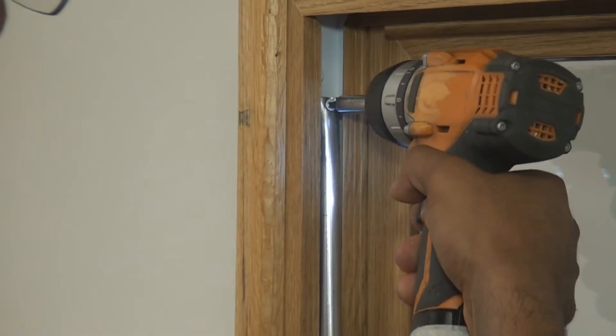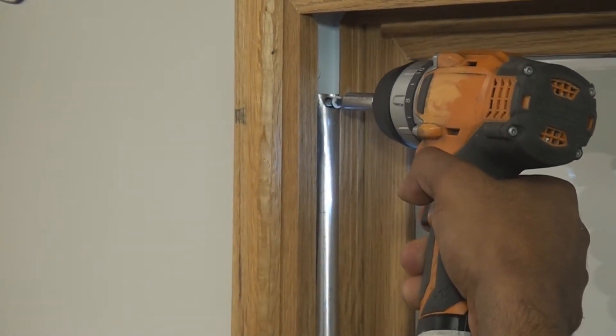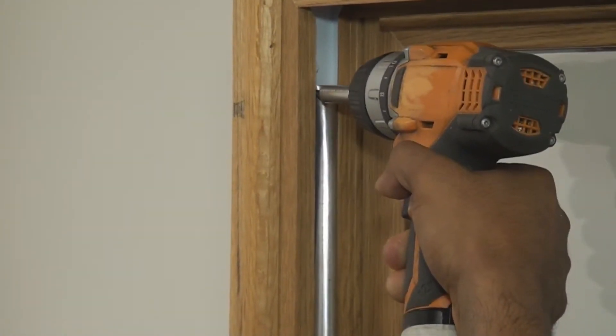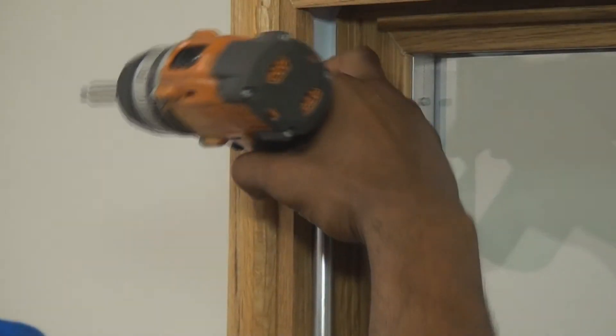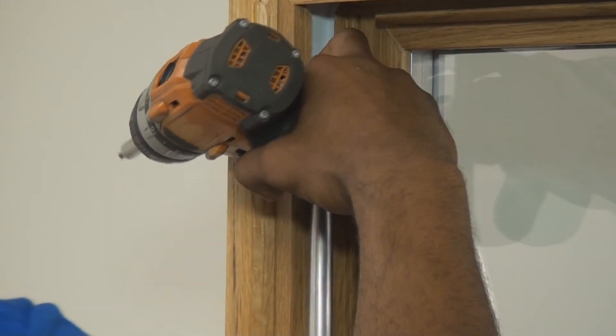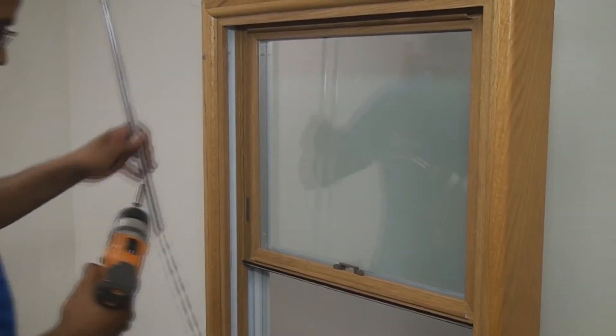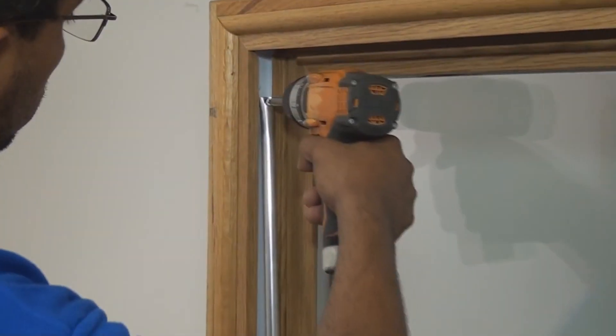Then you will need to use your screw gun to unscrew the screw that is holding the balancer in place. Remove the old balancer and replace it with the new balancer. You will need to screw the new balancer back in using your screw gun.